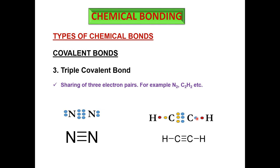You might wonder why ethylene has a double bond while acetylene has a triple bond between carbon atoms — we will discuss that in the next lecture. That's all for today. Thank you for watching and see you later.